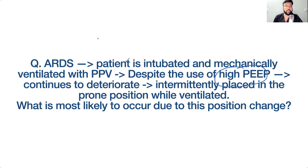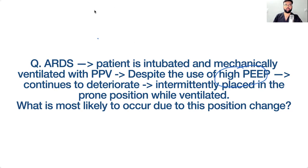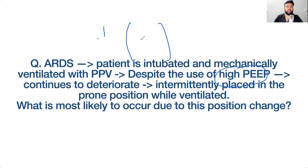A patient with ARDS is intubated and on mechanical ventilation with positive pressure and high PEEP. Despite this, he continues to deteriorate. The patient is placed in the prone position and shows some improvement in oxygen saturation. Why? When prone, there is more space for alveoli to open up. Most lung tissue is on the posterior side.